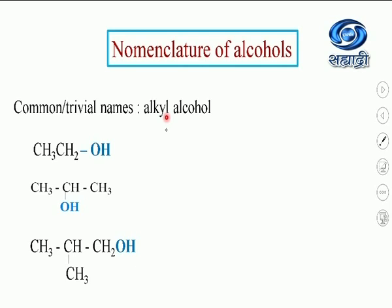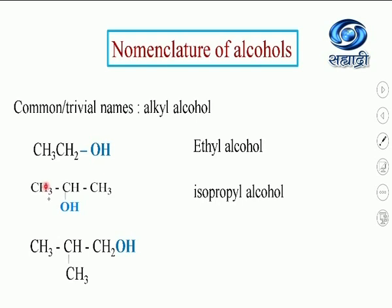There are common or trivial names for alcohols, named after the alkyl group bearing the OH. For the first structure, the alkyl group has two carbons — it is ethyl — bearing OH (alcohol), so the name is ethyl alcohol. For the next compound with three carbons, the OH is on the second carbon atom, so it is isopropyl alcohol. Ethyl alcohol is primary; isopropyl alcohol is secondary, because the carbon bearing OH is attached to two carbons.